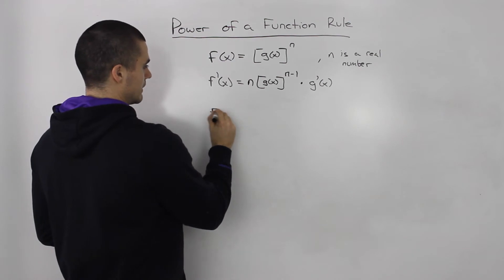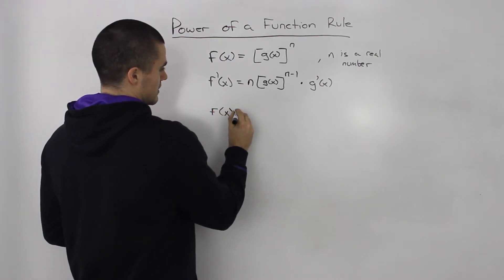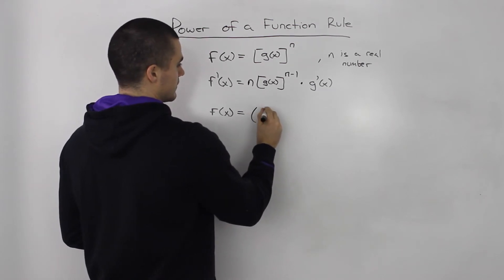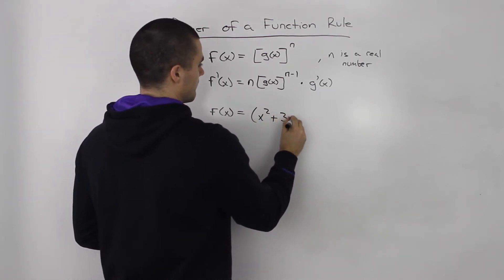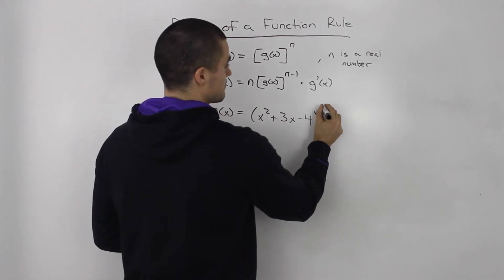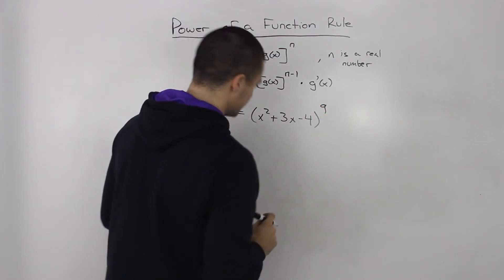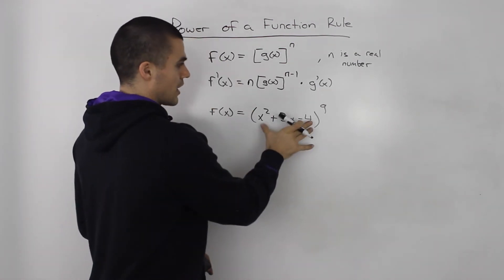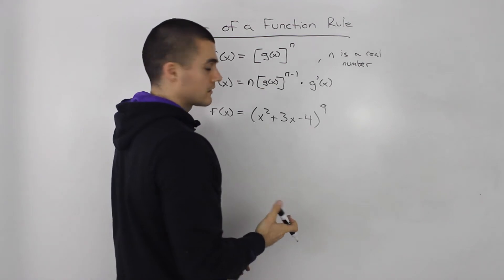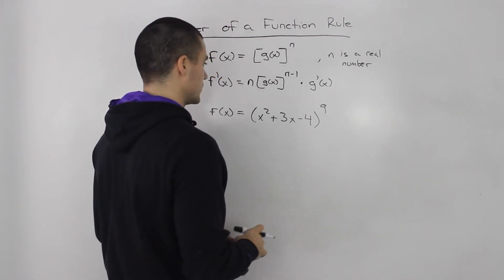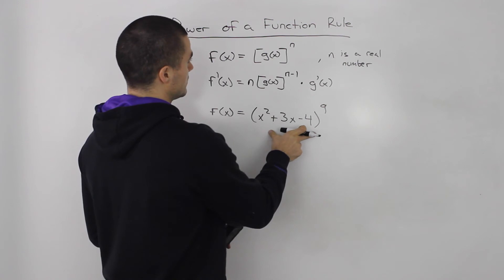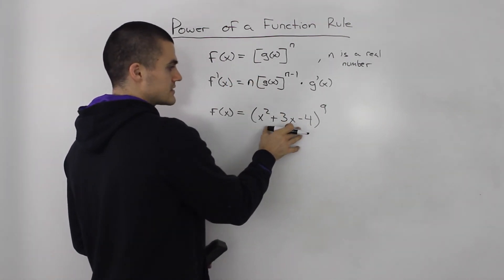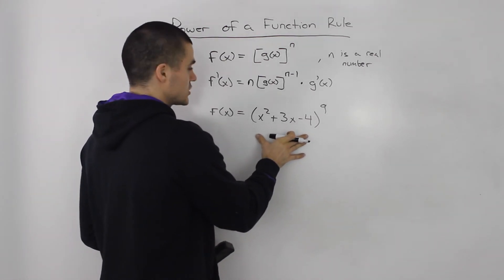So for example, let's say that we have something like (x² + 3x - 4) to the power of 9. Okay, so obviously we're not going to expand this to the power of 9. That would take us a really long time. So this is where the power of a function rule comes into play. It makes it a lot easier to take the derivative of a function like this.